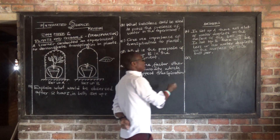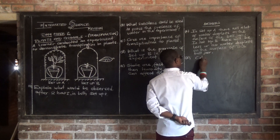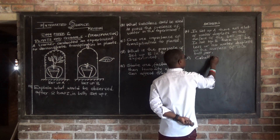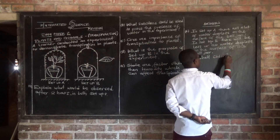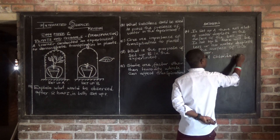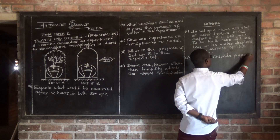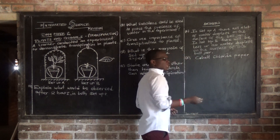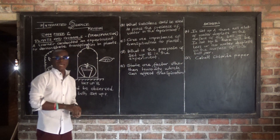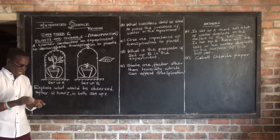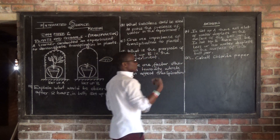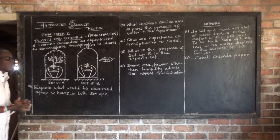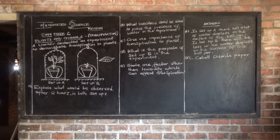That substance is called cobalt chloride paper. Or you can also use anhydrous copper sulfate. Sometimes in final exams you may be asked to explain the color changes of these substances, or how these substances change as they come in contact with water.